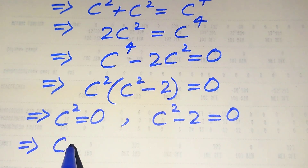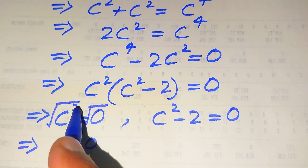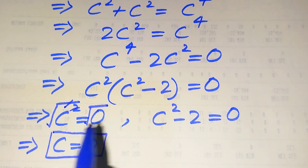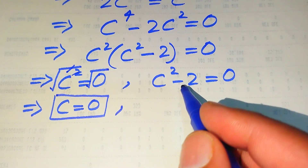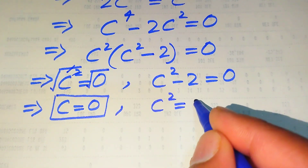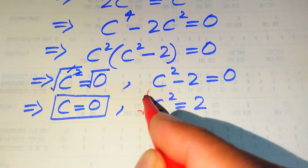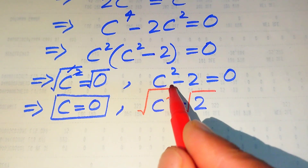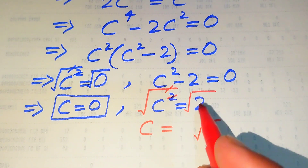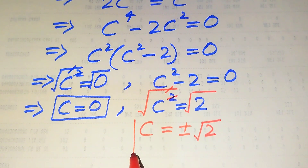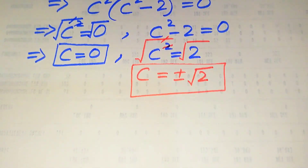From the first case, c squared equals zero, we take the square root of both sides and easily get c equals zero. This is the first root. For the second case, we move minus two to the right hand side to get c squared equals two. Taking the square root of both sides gives c equals plus or minus square root of two.